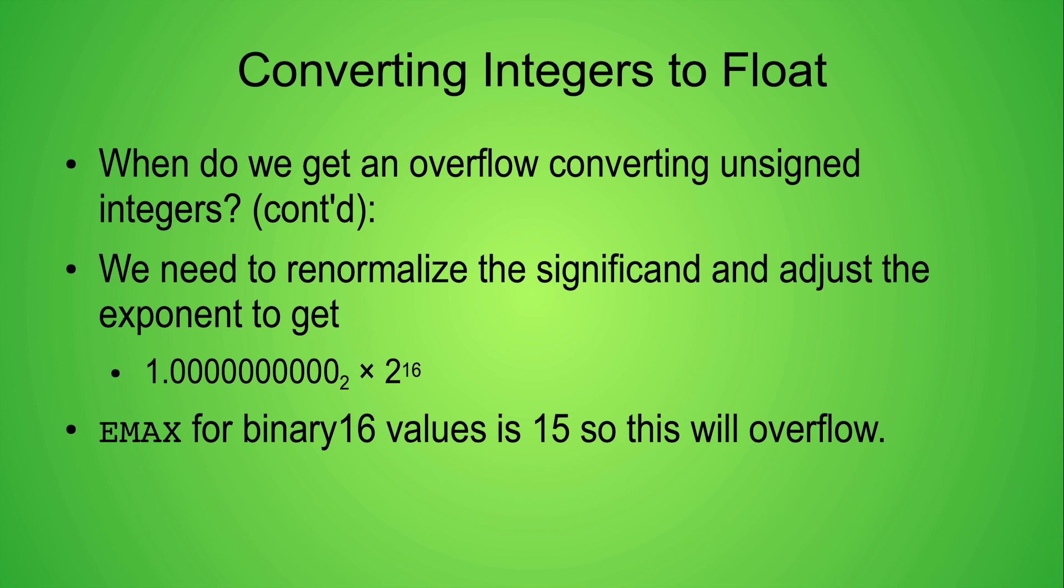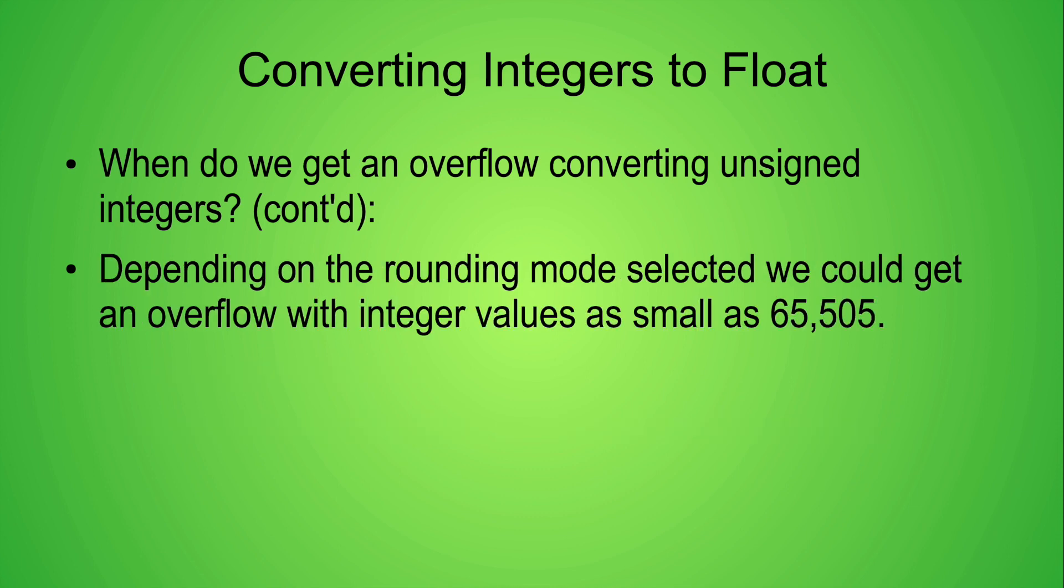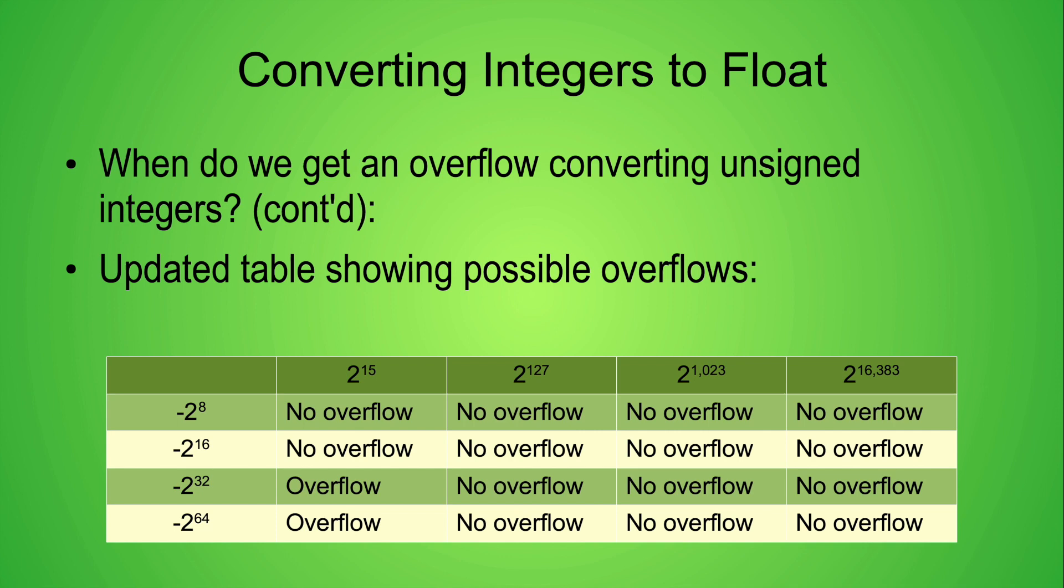By the way, 65,535 isn't the only 16-bit unsigned integer value which may cause an overflow. Depending on the rounding mode values as small as 65,505 may cause an overflow when converting to the binary16 floating point. Converting an unsigned 16-bit integer to any of the larger binary floating point formats will not cause an overflow. Note that in this table I've adjusted the exponent for integers to account for the effects of rounding.